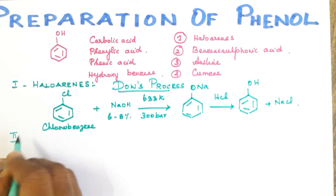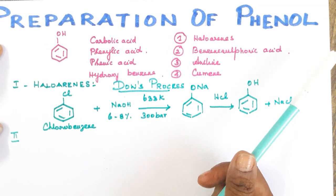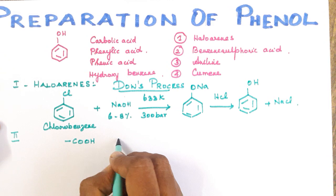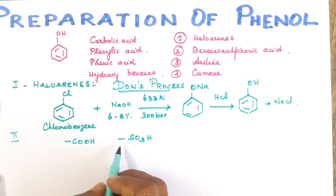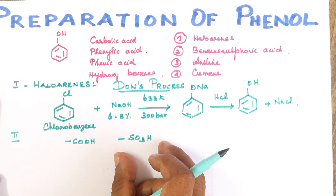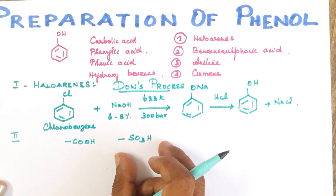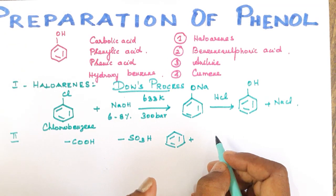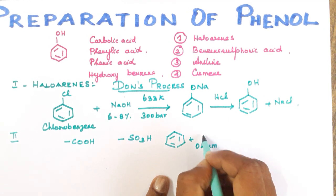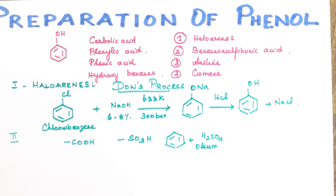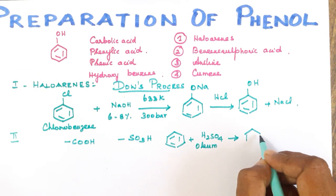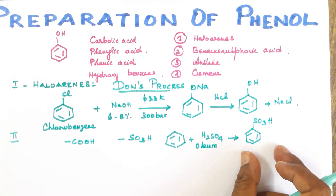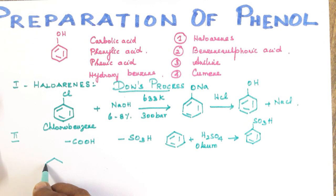The second method uses benzene sulfonic acid. Benzene sulfonic acid has an SO₃H group attached to the benzene ring, unlike a carboxylic acid which has COOH. Benzene sulfonic acid is prepared by treating benzene with fuming sulfuric acid, also called oleum — a very concentrated form of sulfuric acid.